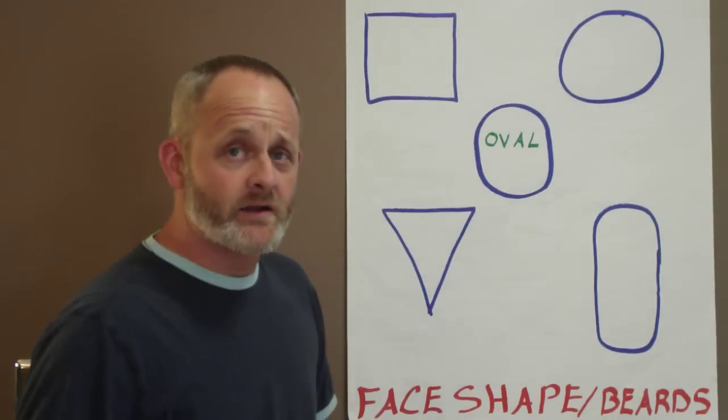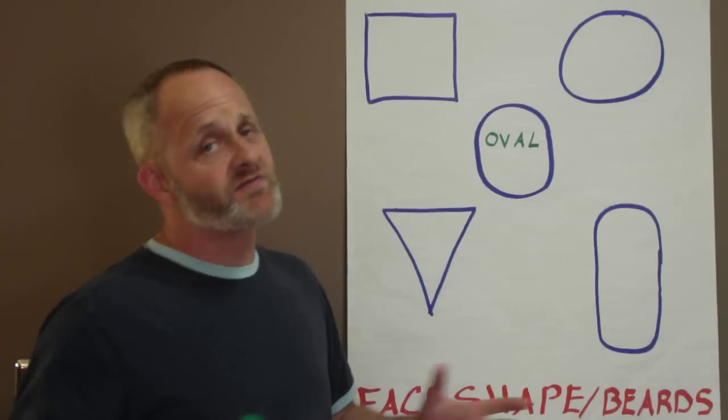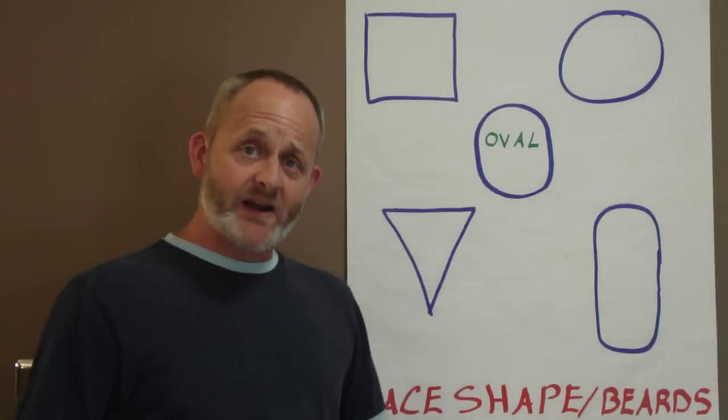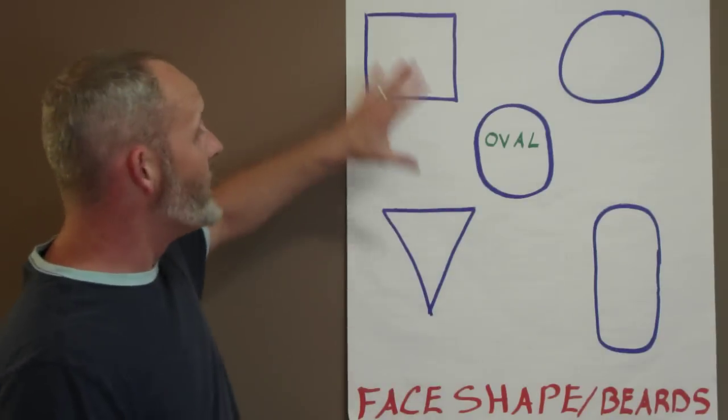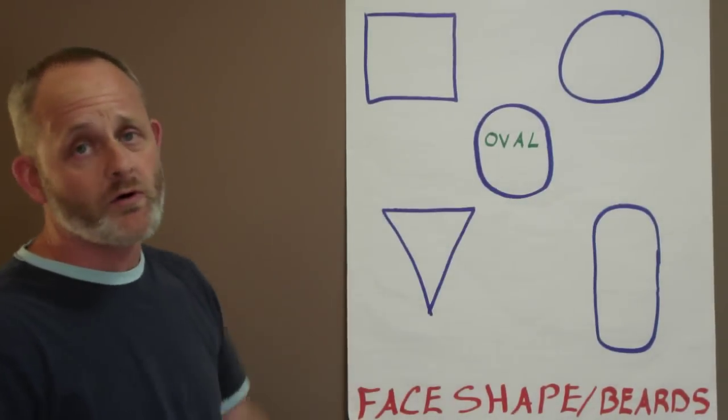My name is Corey Allen, and I was asked to go over face shapes and beards, the different types of beards that go along with the face shape. The most flattering face shape that everyone is looking for is the oval face shape. So we're going to try to figure out what beard we can put on each one of these to create an oval shape.